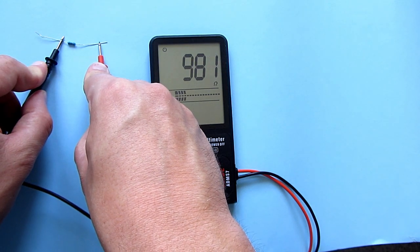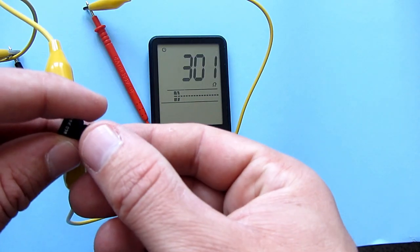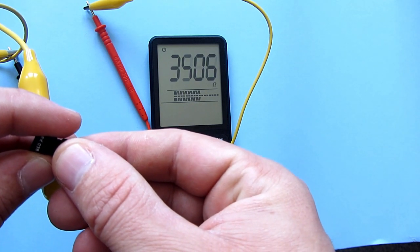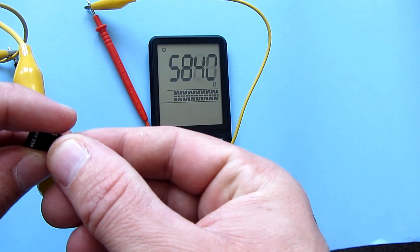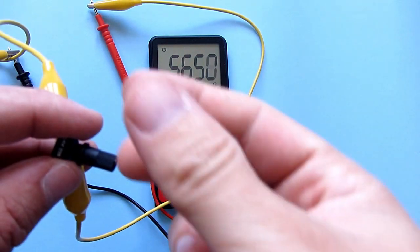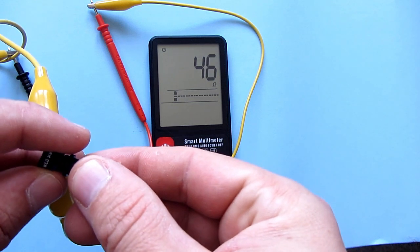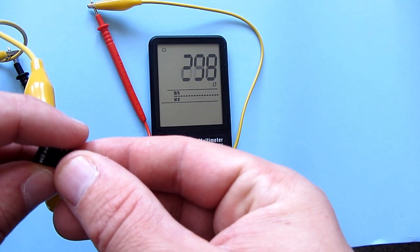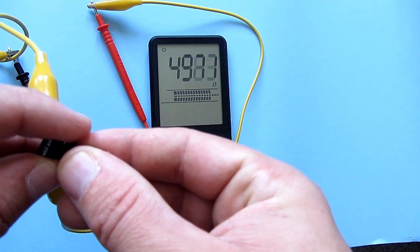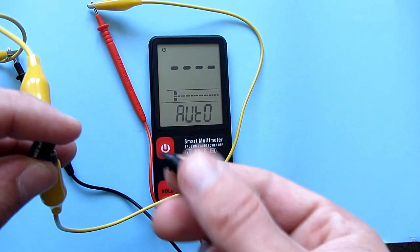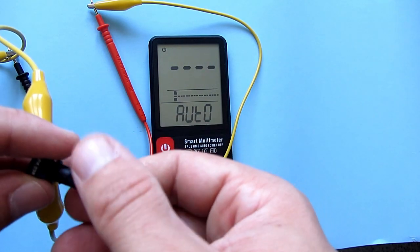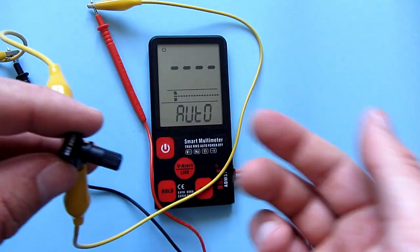But here is a catch. If I connect a 100K potentiometer, we can see that this multimeter can measure resistance just up to 6K, 6000 ohms. Anything with resistance greater than 6000 ohms is impossible to measure. I think this is the greatest problem of this device. We use very often resistors that have greater resistance than 6K.